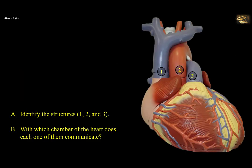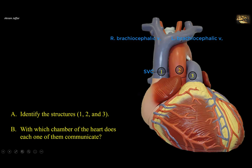Identify the structures 1 to 3, and with which chamber of the heart does each one communicate? This is a view of the anterior surface of the heart with the great vessels. One is the superior vena cava, formed by the union of the left and right brachycephalic veins. The left brachycephalic is longer and more horizontal than the right because it has to cross the midline. The superior vena cava drains blood from the body above the diaphragm to the right atrium, which forms the right border of the heart and has an auricle.